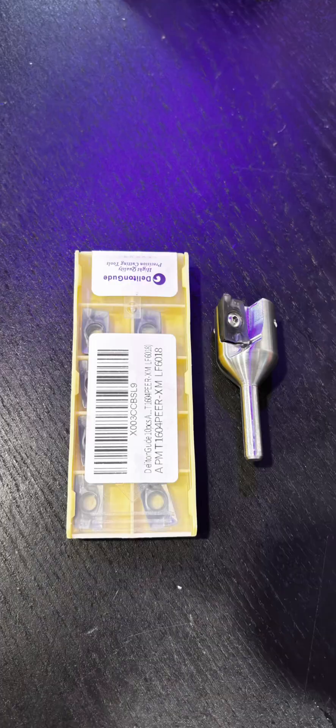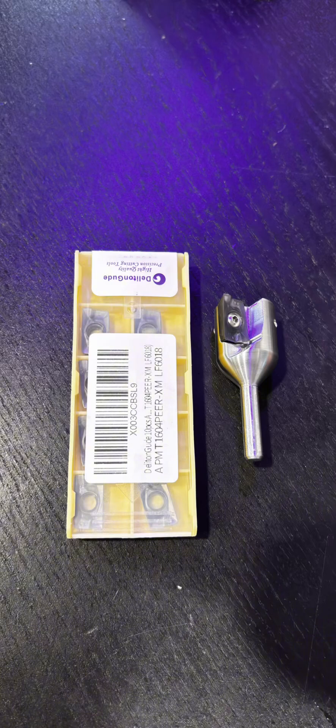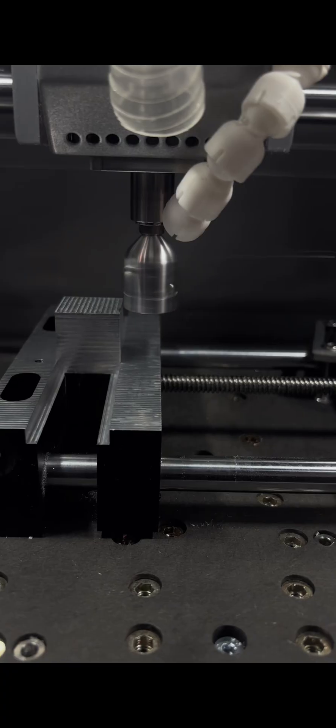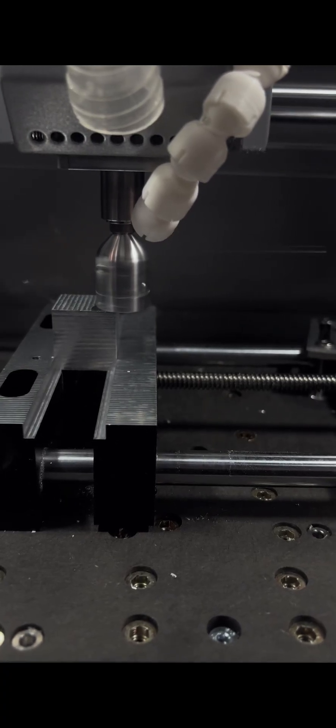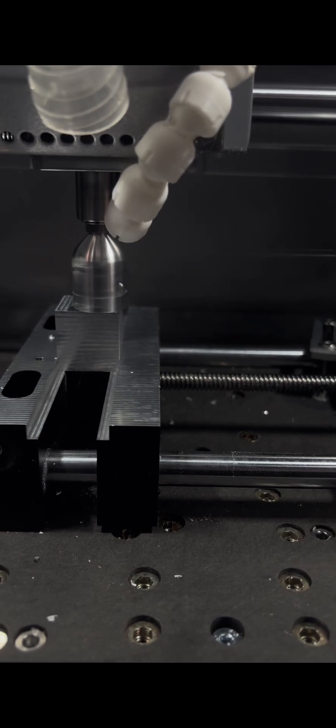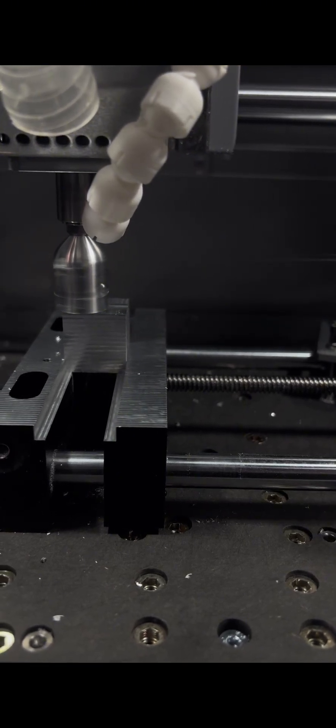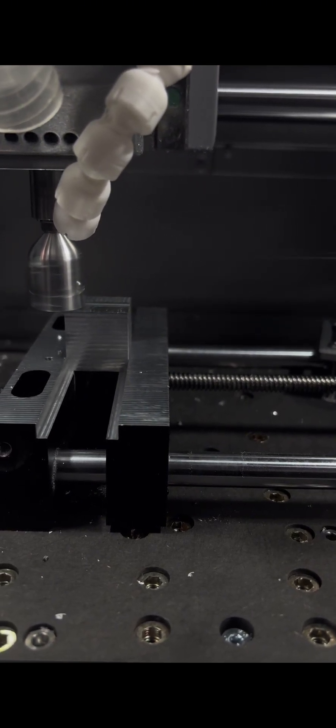Then I threw in some APMT 1604 inserts on it. And for my first cuts I was running a 0.5 step down at 500 millimeters a second feed rate with an 8K RPM on the spindle.